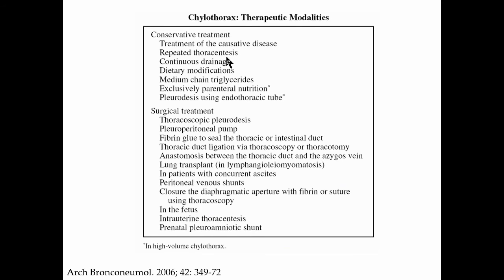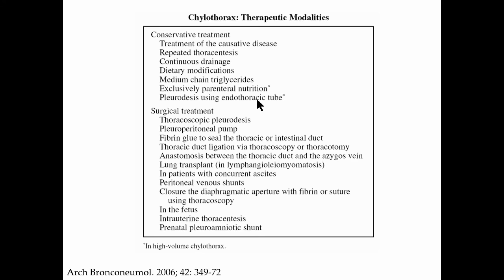Chylothorax falls into a very similar thought algorithm. We obviously want to treat the underlying disease in these lymphatic malformations, though that may not be so achievable other than through interventions now on the forefront, like sirolimus to treat the underlying vascular growth disorder. We may need repeated thoracentesis, and at times in the natural history of these patients there may be a need for continuous drainage interventions. The dietary modifications are the same — a low-fat diet, less than 5 grams per 24 hours, with medium-chain triglyceride supplementation. Sometimes parenteral nutrition is needed, at least at an interval, in high-volume chylothorax. And sometimes we resort to pleurodesis in these cases.